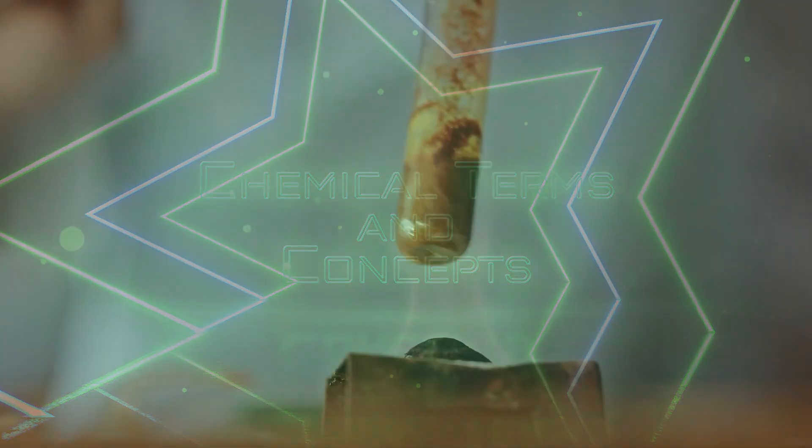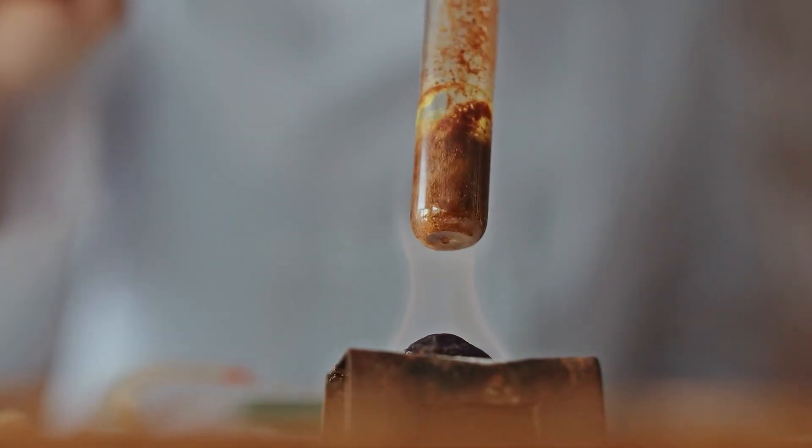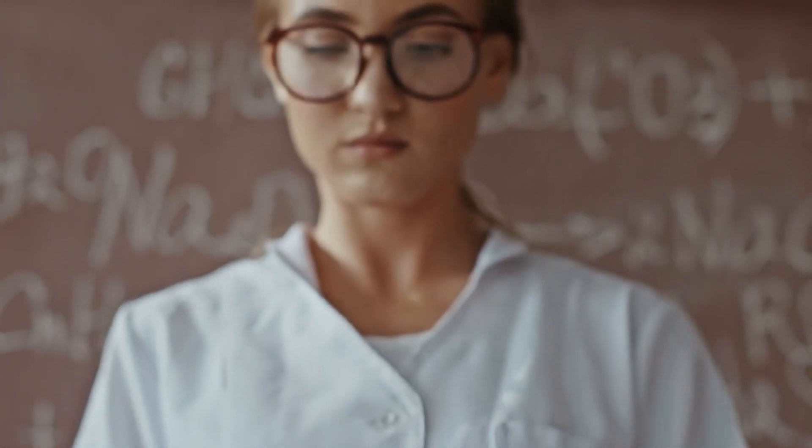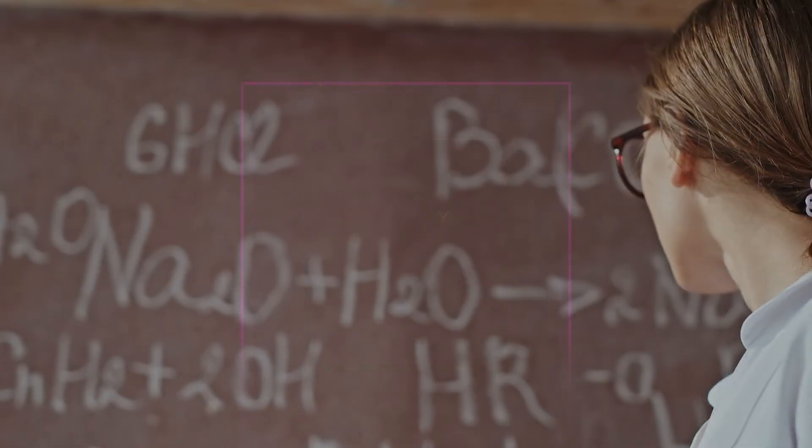Chemical properties are characteristics that become evident during a chemical reaction. These properties are crucial to understand as they can help us predict how substances will behave and interact with each other.